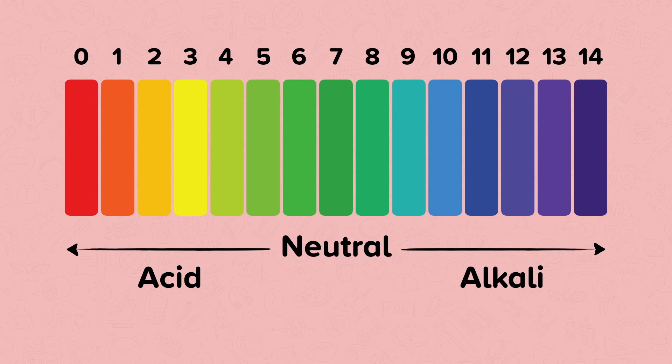An acid has a pH of less than 7. An alkali has a pH of more than 7. A solution that is not acidic nor alkaline is neutral. A neutral solution has a pH of 7.